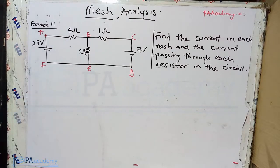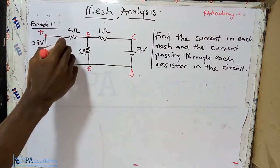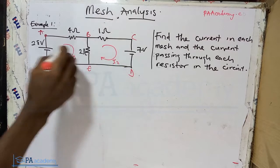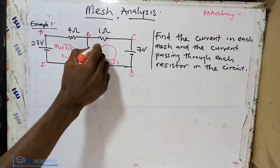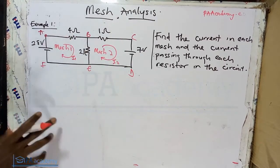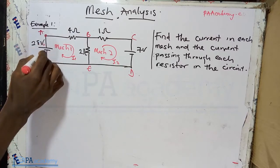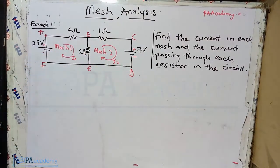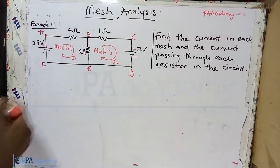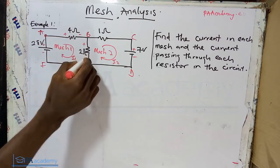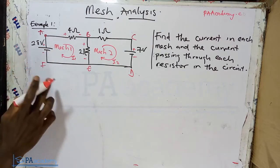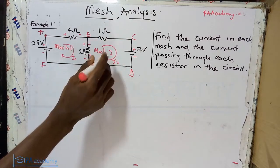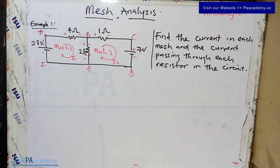Having identified the meshes, the next thing is to pick our current direction. I'm going to pick a clockwise direction. For mesh one I'll call the current I1, and for mesh two also a clockwise direction, I'll call it I2. Now that I've picked the direction of currents, let's add our polarity. For the voltage sources, this is going to be plus and minus — the longer side is positive, the shorter one is negative. For the resistors, we add polarity based on the mesh current direction: starting with mesh one, this is going to be plus then minus.